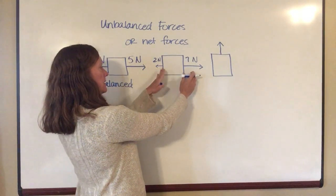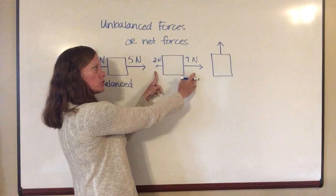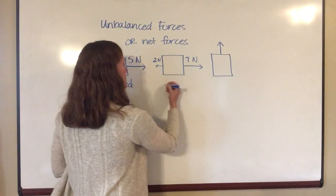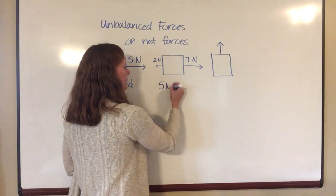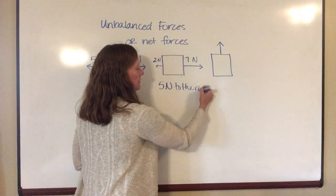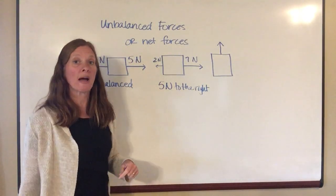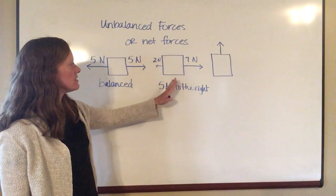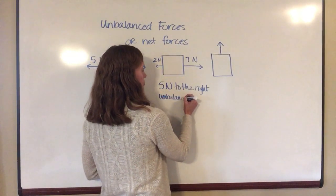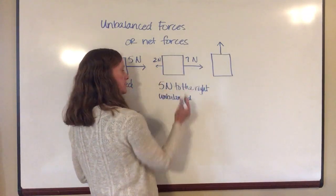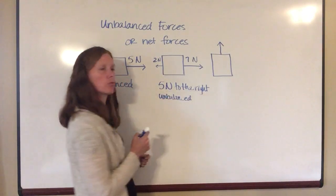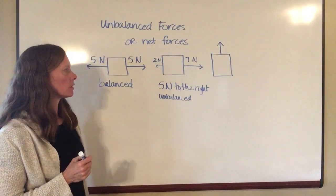And the 7 newtons is offset by 2 this direction. So since these are pulling in opposite directions, I will end up having a force of 5 newtons. And because force is a vector quantity, I always have to give a direction with my force. So the net force, this one is an unbalanced force because you can see that the two forces are not the same. And so therefore my net force is 5 newtons to the right on this particular object.